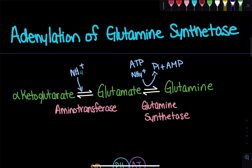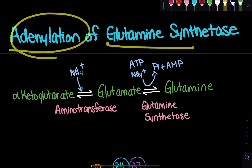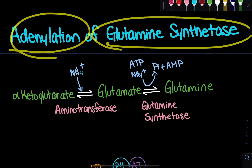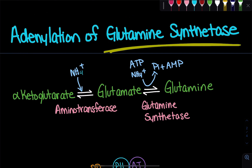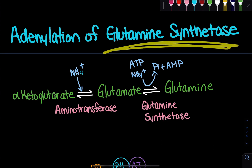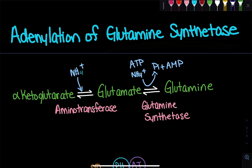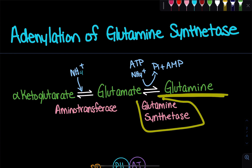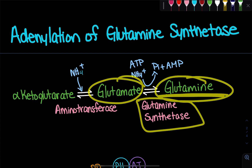When we talk about the adenylation of glutamine synthetase, we're essentially talking about how we can regulate this enzyme. Glutamine synthetase is an enzyme that produces glutamine — it catalyzes the reaction from glutamate to glutamine.